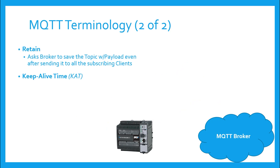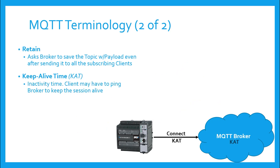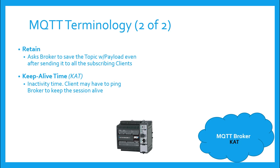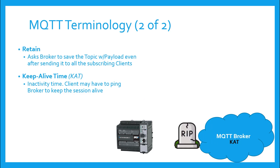Keep Alive Time — this time value tells the broker how often he should hear from the client before considering him to be dead. If publishing, subscribing, and updating is happening between broker and client faster than the Keep Alive Time, then all is well. If, however, for some reason there is no activity between them, then the BRICS PLC will purposefully ping the broker at about 75% of this value to let him know that he is not dead. If he does not do this and the Keep Alive Time expires, the broker will consider the client to have died.